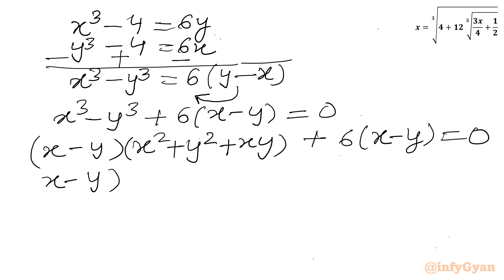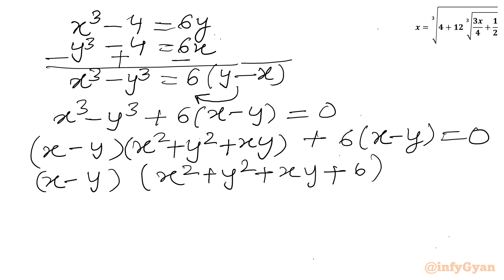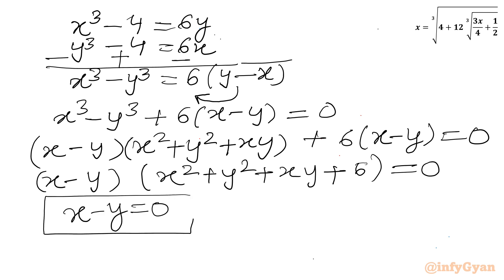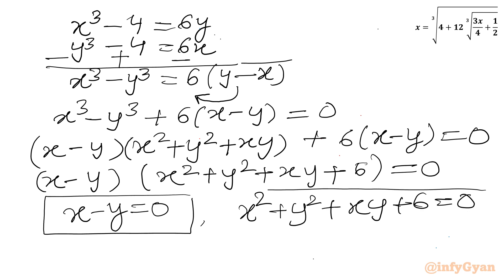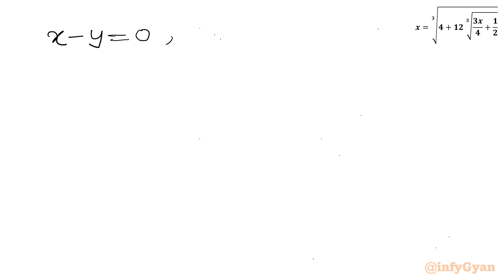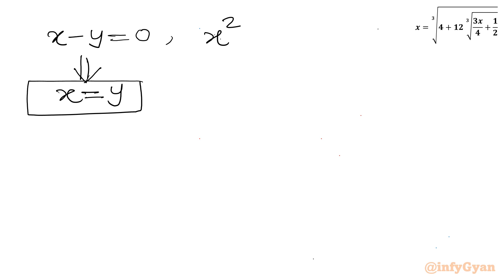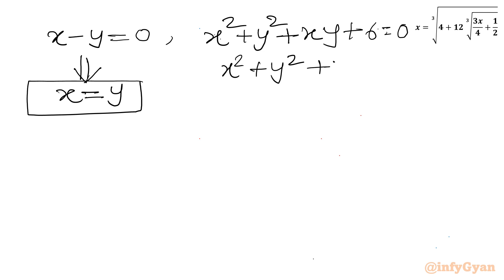Taking x minus y as a common factor, we get x minus y times (x squared plus y squared plus xy plus 6) equals 0. So the conclusion is either x minus y equals 0, or x squared plus y squared plus xy plus 6 equals 0. From the first case, x equals y. From the second case, x squared plus y squared plus xy equals negative 6.